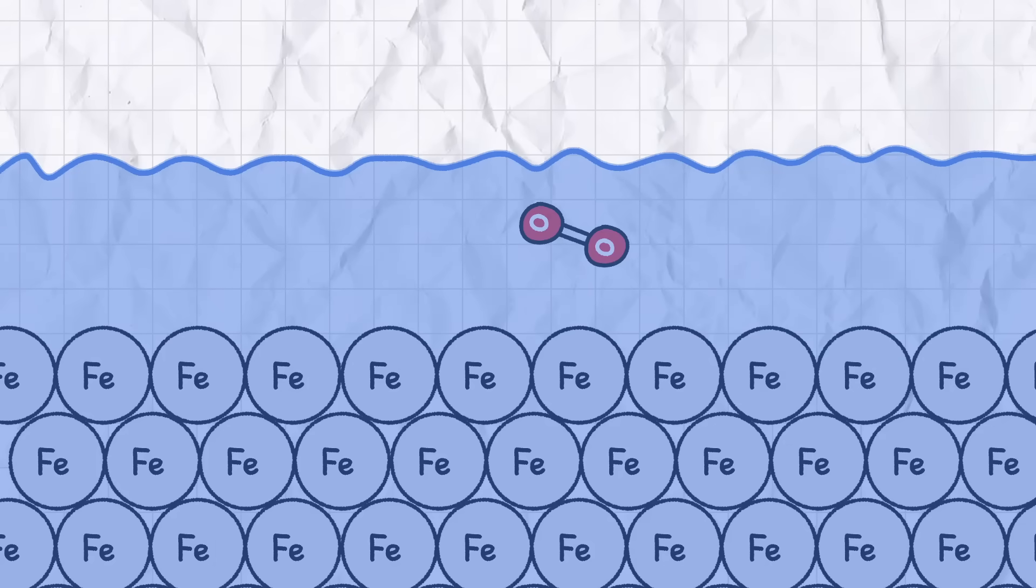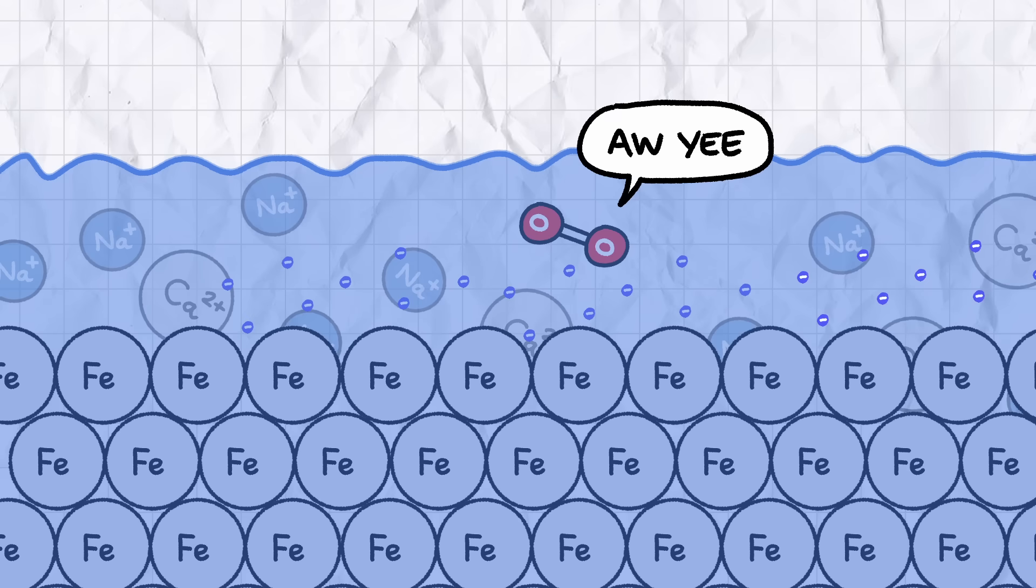Water, on the other hand, is a great medium for electrons to flow through, especially if it has lots of metal ions. With a nice layer of water to bridge the gap between iron and O2, electrons can readily flow from the iron atoms to the oxygen.